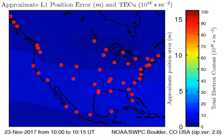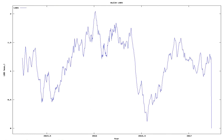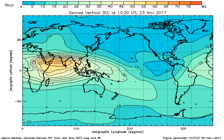And here we see the total electron content above the Earth. Anomalies in total electron content have sometimes preceded earthquakes below that area on Earth. And now we see changes in the speed of the rotation of the Earth.